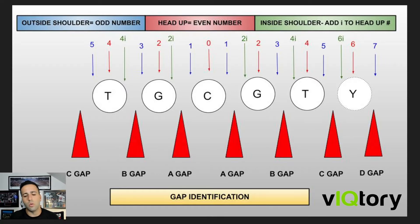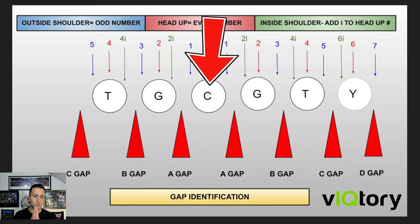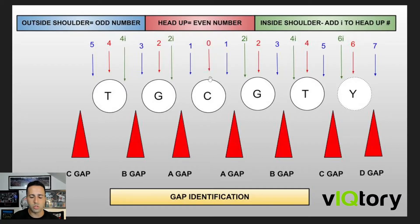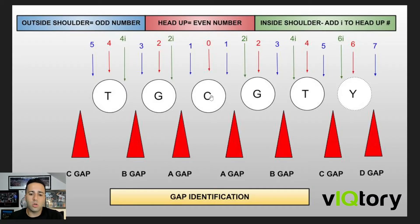Going over this picture, the way that we describe defensive line techniques is three different ways. We always want to start from the center going out. Starting with the center, we're always going to start him as the midline piece, and then work out from there to each offensive lineman. Head up on the center is going to be a zero — that's the midline part, that's where the technique line alignment starts.